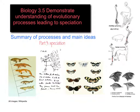This is the third of the evolution and speciation videos, and this one is going to focus on speciation, in particular looking at two forms: sympatric speciation and allopatric speciation. It is just a revision tool, a way of bringing some ideas together, and it will not be enough in itself to provide you with an in-depth understanding.